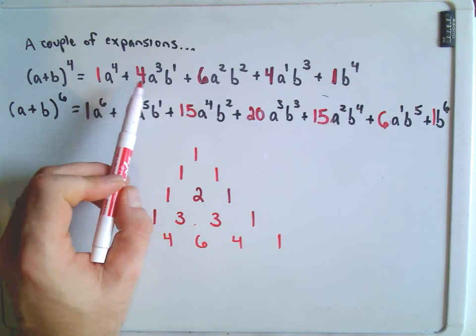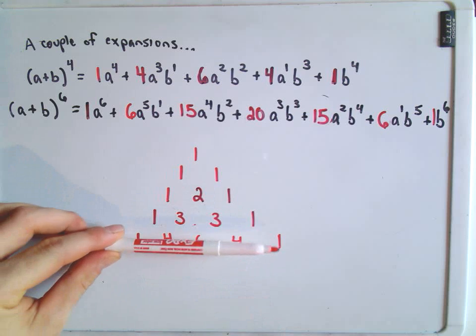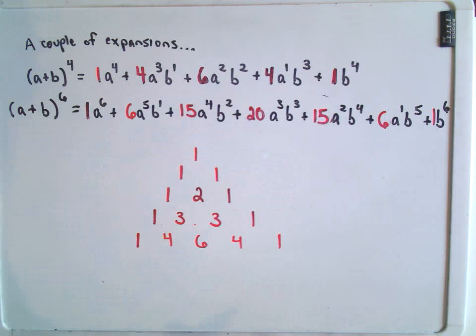Look at the coefficients. 1, 4, 6, 4, 1. It's going to turn out that every row is going to give you the binomial coefficients.